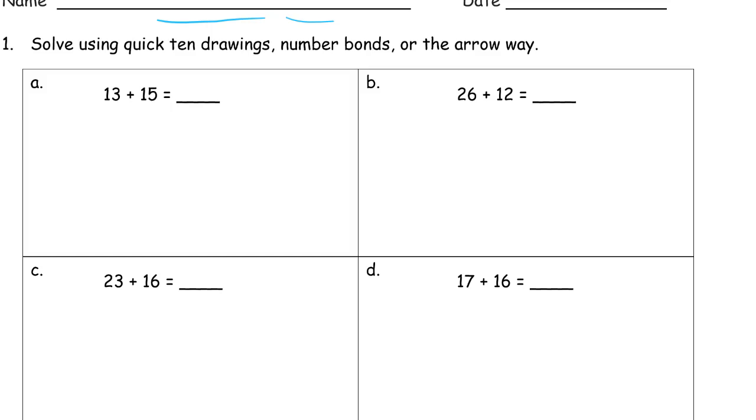If you're a big fan of quick 10 drawings, fine, do every single one with quick 10s. That's okay. Or number bonds. You've got a strategy you really like, keep using it. Arrow way is great too. If you're just good at the mental math, that's a great way to practice how to write down your mental math. But I really encourage you to use all of the different strategies and think about what the numbers are and which one will probably work better.